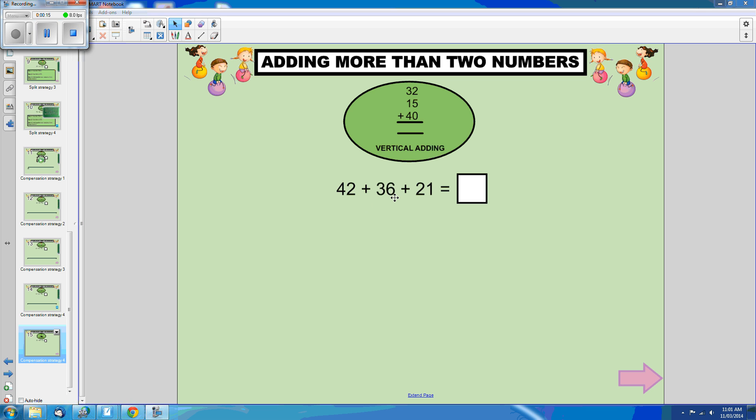So for 42 plus 36 plus 21, we would simply write 42 and place the 36 underneath it, lining up the ones column and the tens column, and the same with 21.